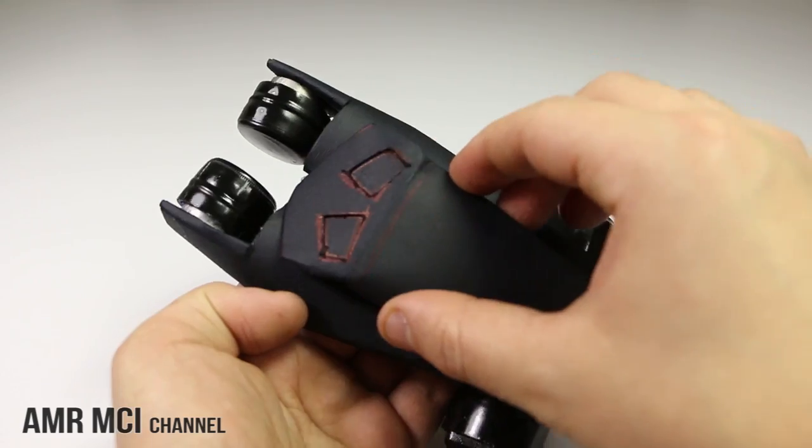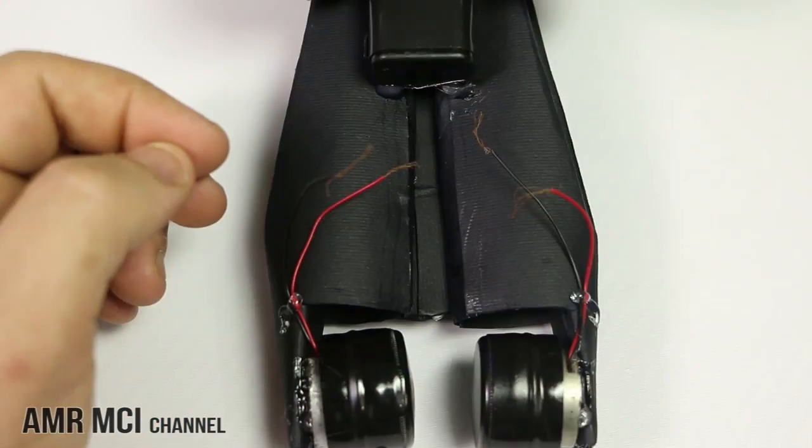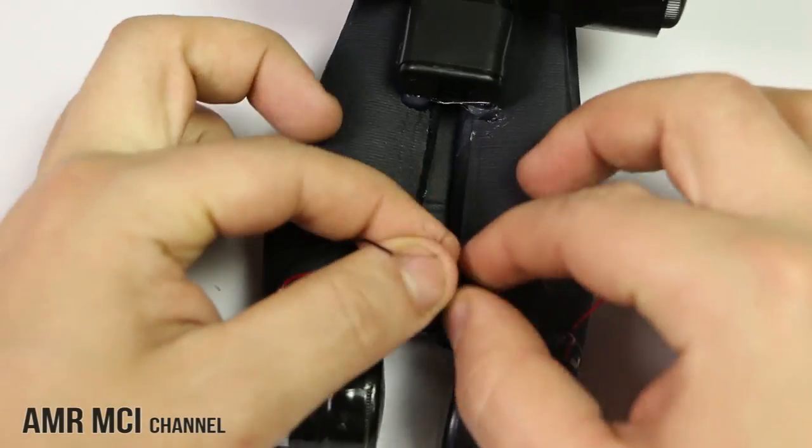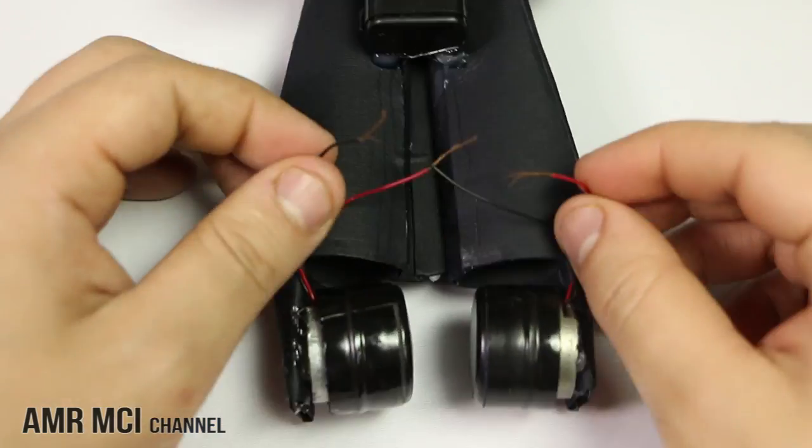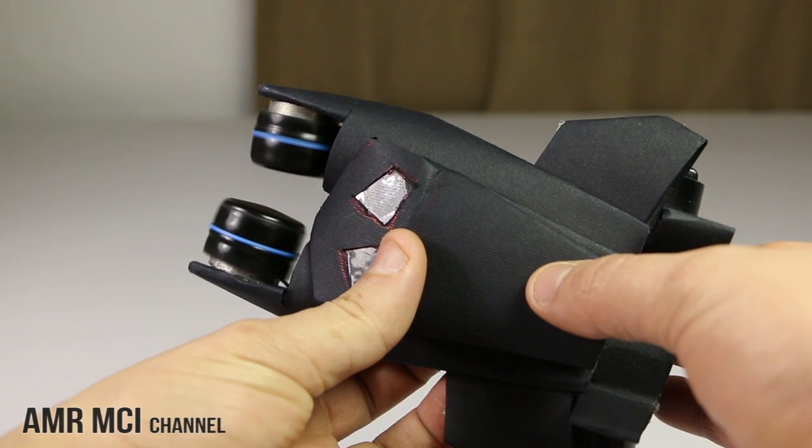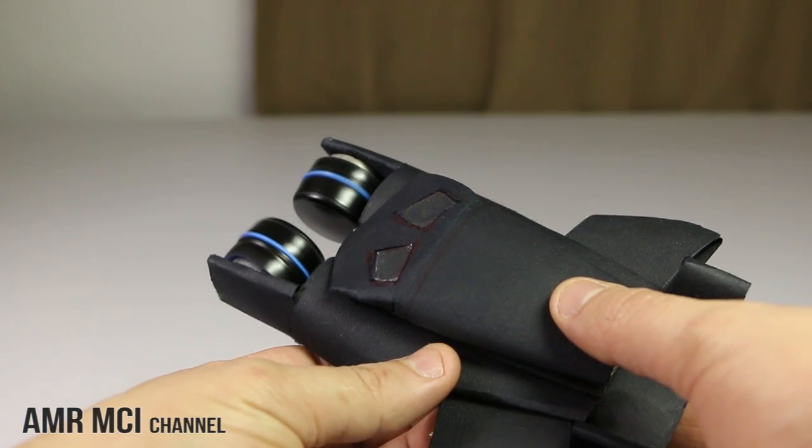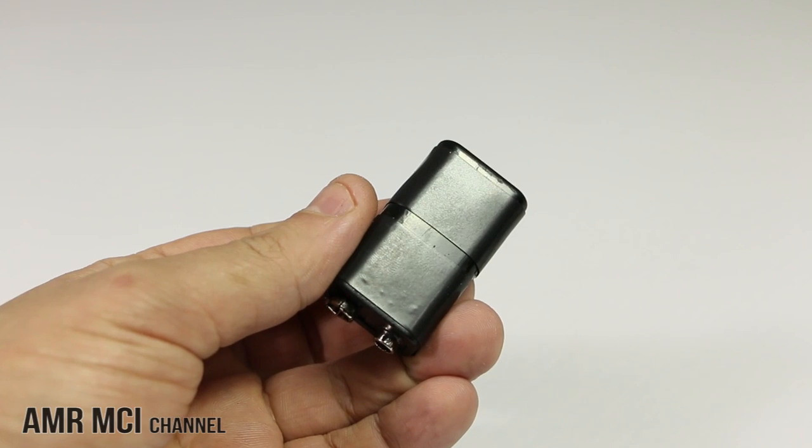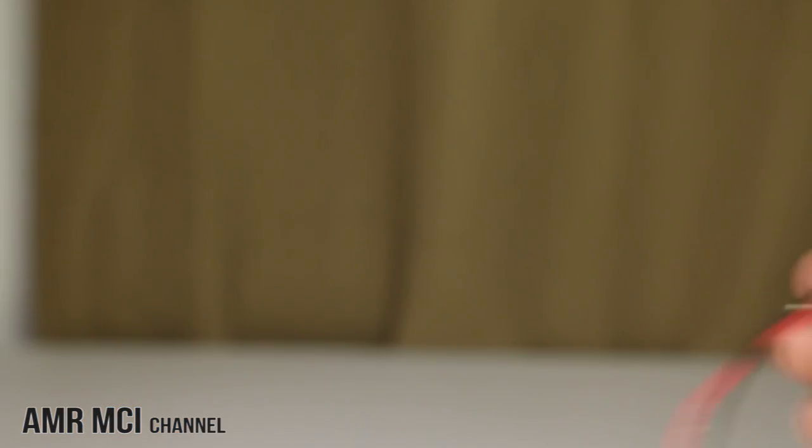To power up the motors, you need first to connect the motors together by connecting each wire to a different colored wire of the other motor. This will make the motors rotate in the same direction once they are connected to a power source, which is the 9-volt battery in this case.